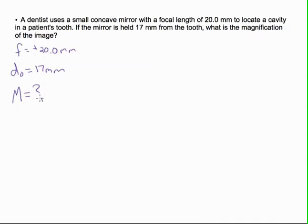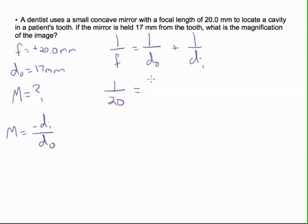You can see in your notes that the magnification equation can be written like this, but to use this equation, we need to know the image distance. So we can do 1 over F equals 1 over object distance plus 1 over image distance. 1 over 20 minus 1 over 17 equals 1 over the image distance.